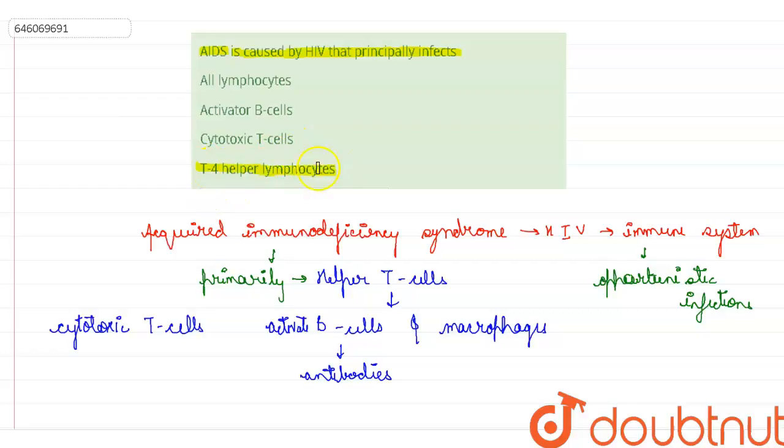The last one, T helper cells or T4 lymphocytes, that is correct because they principally infect these and by infecting these, they affect the B cells also and cytotoxic T cells also. So the correct option here will be option 4.